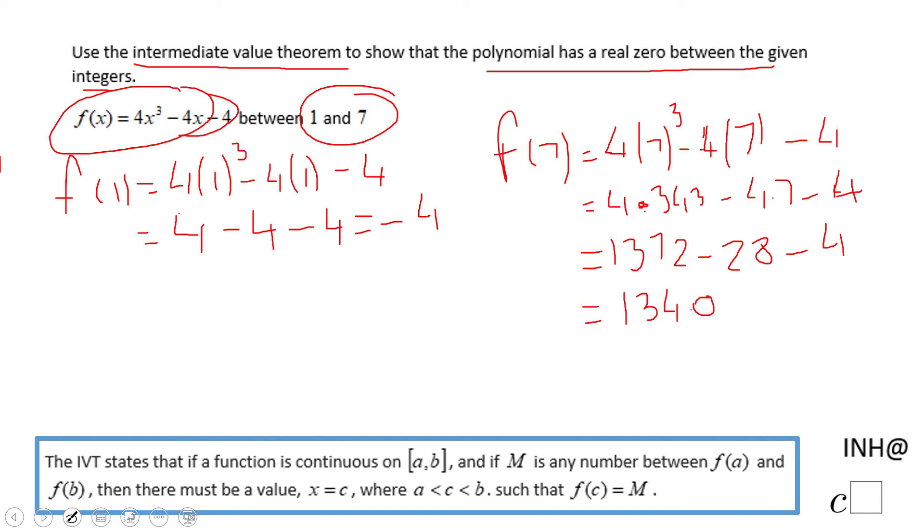Okay, so look at this. We notice that f(1) is negative and f(7) is positive, so the function goes from negative to positive.